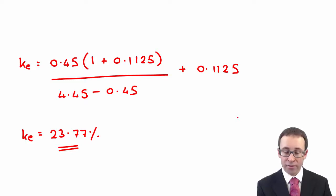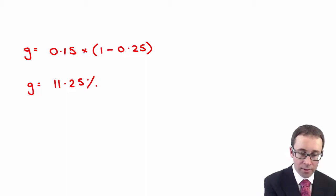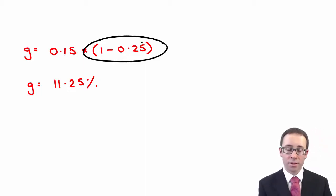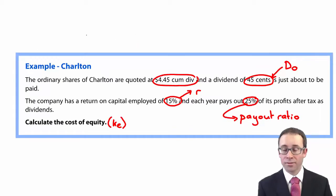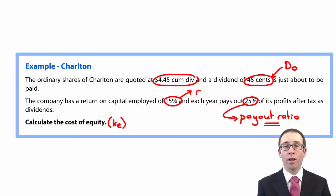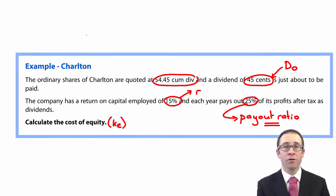The main difficulty in that question is working out the growth rate. You need to be careful when looking at the retention, because retention is one less the payout rate — if we paid out 25%, then one less that 25% gives 75%, which is what we retained. Have a go at the questions and see how you get on. If you've got any specific questions, please feel free to ask the tutor on the forum.